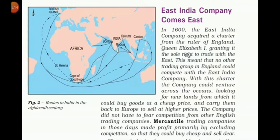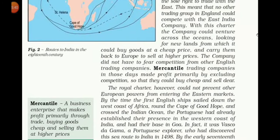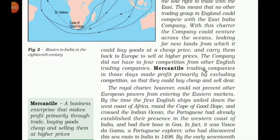They were searching for a good country to buy goods from India at a very cheap price and sell them at a very high price to make profit. However, the Royal Charter could not prevent other European powers from entering the Eastern market. By the time the first English ship sailed down the west coast of Africa, round the Cape of Good Hope, and crossed the Indian Ocean, the Portuguese had already established their presence on the western coast of India and had their base in Goa.